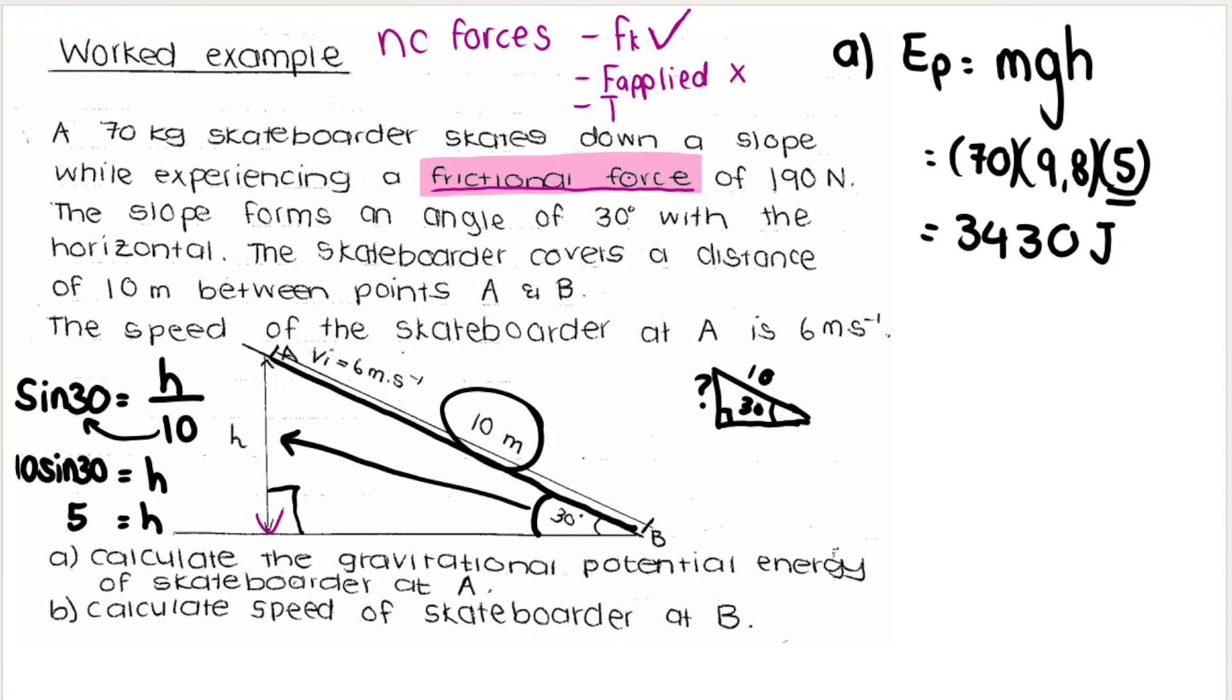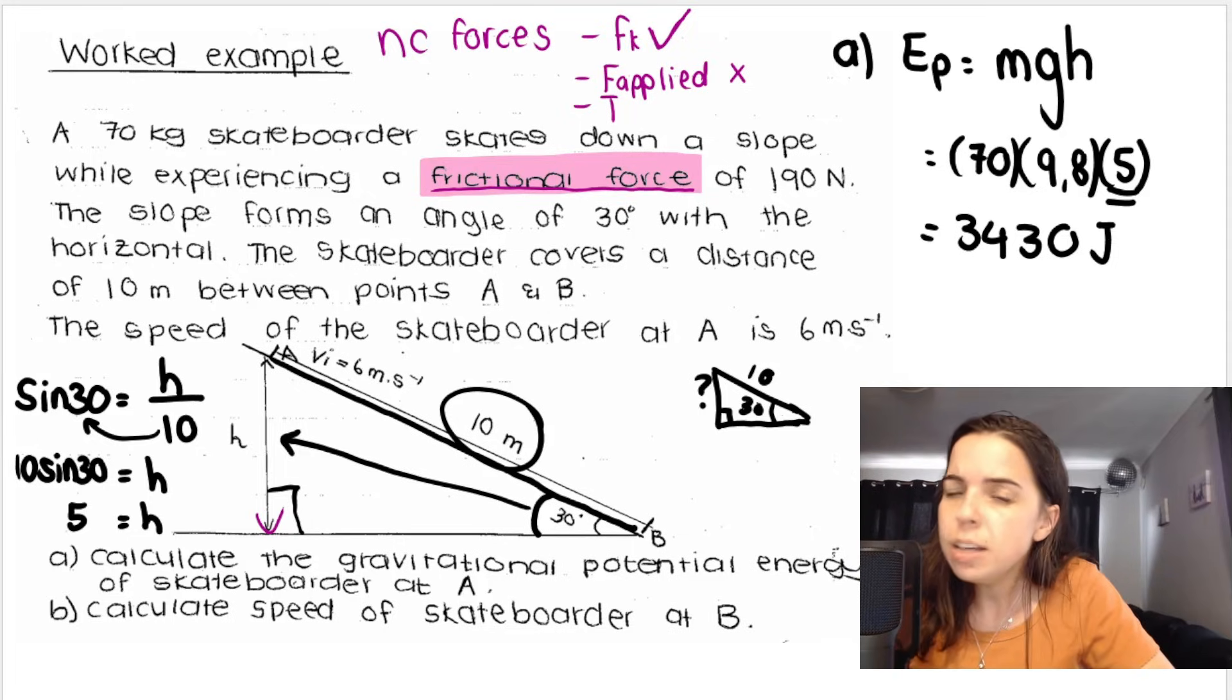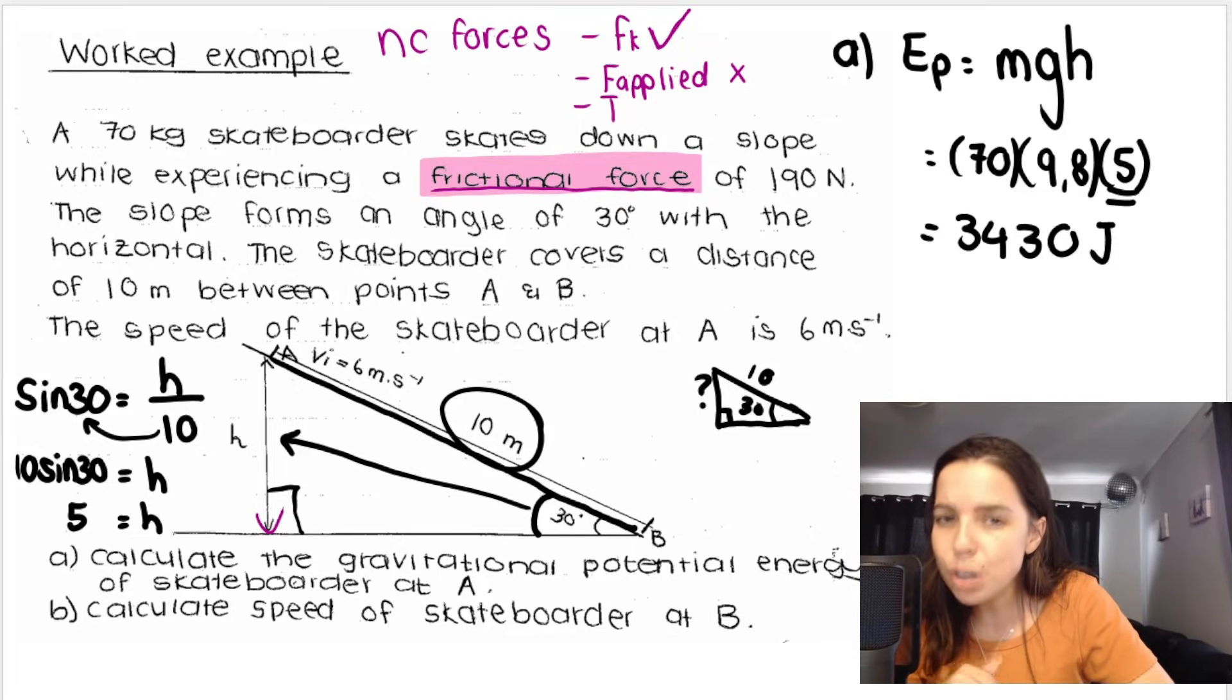Think of it as there's nobody pushing the skateboarder. There's nobody pulling the skateboarder. There's no engine on the skateboard. The skateboarder isn't using his feet or his legs. In this instance, think about a skateboarder just simply standing on his or her skateboard. So in this instance, there's no F applied. And you might be thinking, but ma'am, if there's no F applied, how is the skateboarder getting down the slope?